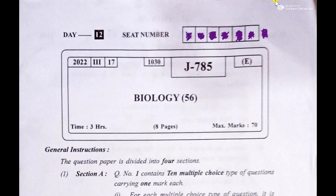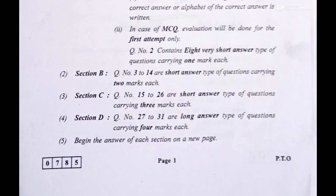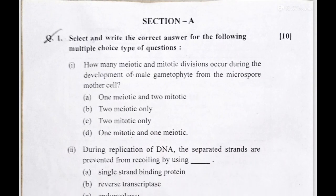Hello, welcome to Technology. I'm Ajit Kumar. Today we'll see the paper solution for Biology subject of Class 12, HSC Maharashtra Board 2022. We'll start with the MCQs. The first MCQ: how many meiotic and mitotic divisions occur during the development of male gametophyte from the microspore mother cell?